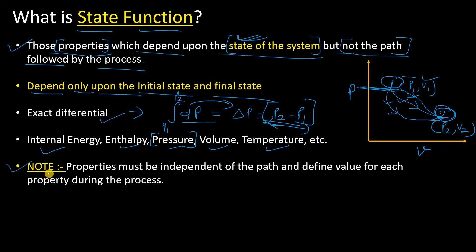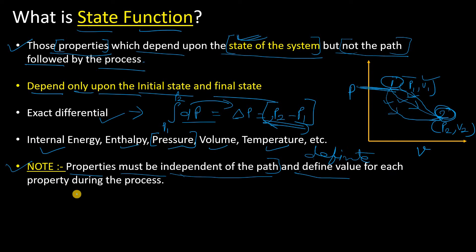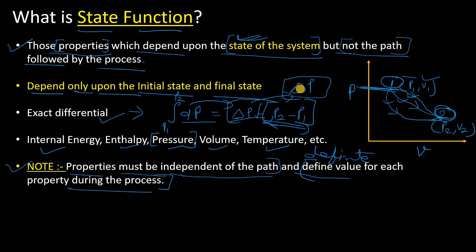One important thing to note: properties must be independent of the path — which I have already told you. Only then can we call them state functions, and they will have a definite value for each property during a process. For example, ΔP will have a definite, known value. So this is the state function.